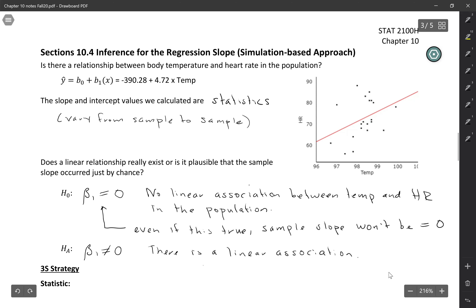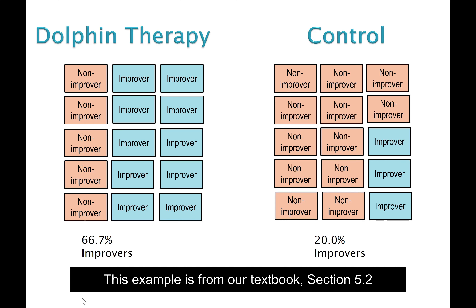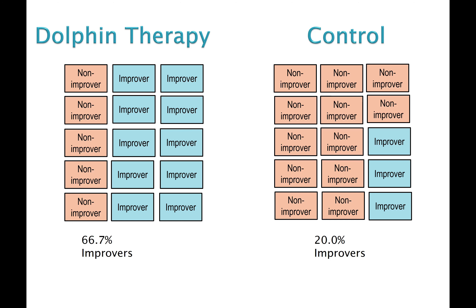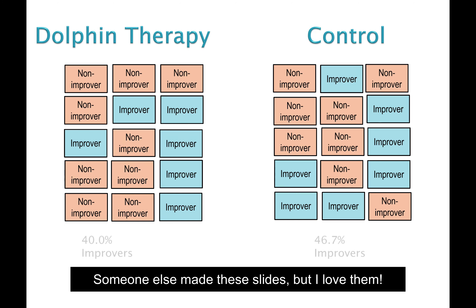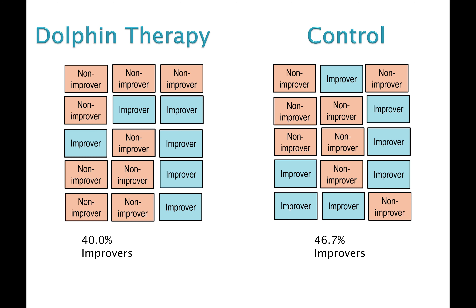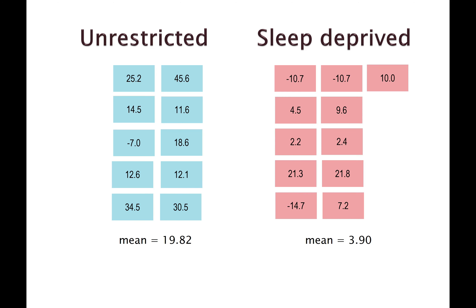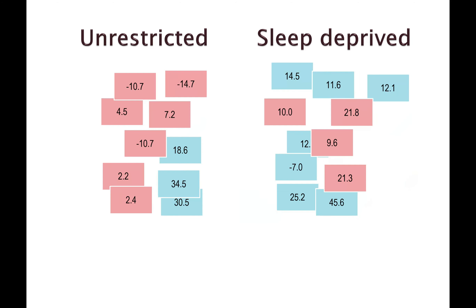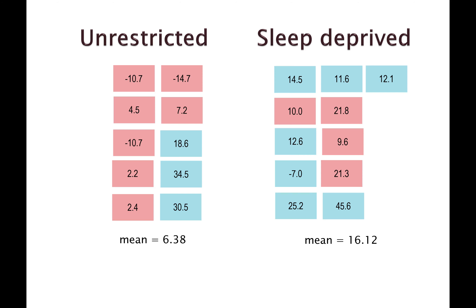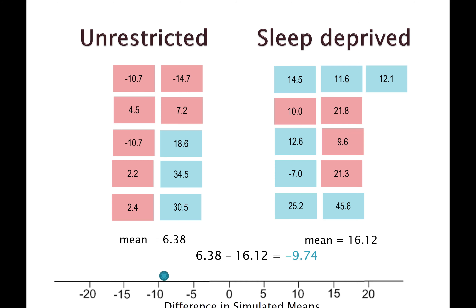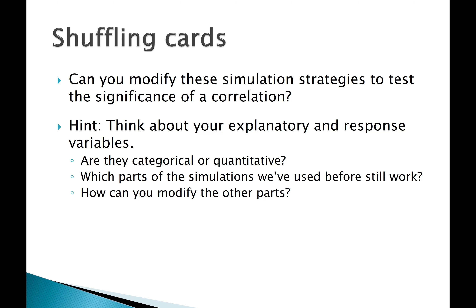Before we jump into the 3S strategy, let's remind ourselves how we've done it in different data contexts. For a treatment and control group, we used different colors to represent improvers and non-improvers, shuffled the cards, dealt them back out, calculated the proportion of improvers in each group, and took the difference in proportions. For a quantitative response, we wrote down numbers, shuffled them, dealt them into two groups, calculated the mean in each group, and took the difference of means. Now let's think about how to modify these strategies to test the significance of a correlation or regression.